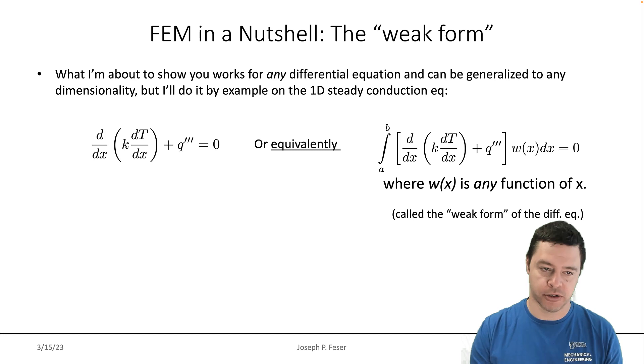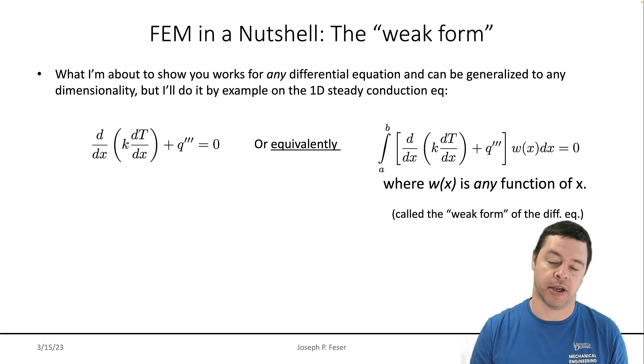So I'm going to take the original differential equation, multiply it by this weighting function, integrate all of that over the domain of the solution, and that'll still be equal to zero because the original differential equation was equal to zero. So like this little bit here was equal to zero, so whatever function I put here doesn't really matter. This integral will have to still be equal to zero. If that's true for any function w(x), then that has to be true for any function w(x), because again, the thing in brackets was equal to zero. So that's called the weak form of the differential equation.